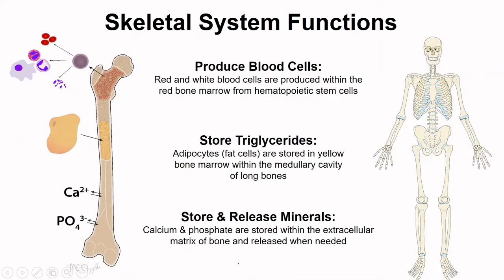Within bone, and specifically within the bone marrow, red and white blood cells are made. And deep within hollow portions of the bone, like this medullary cavity we see here, this is an important point for storage of adipocytes or fat cells. Finally, bones are important in terms of minerals. Mineral balance is imperative to normal body functioning, and bone contains some of the highest concentrations of minerals like calcium and phosphate in the whole body.